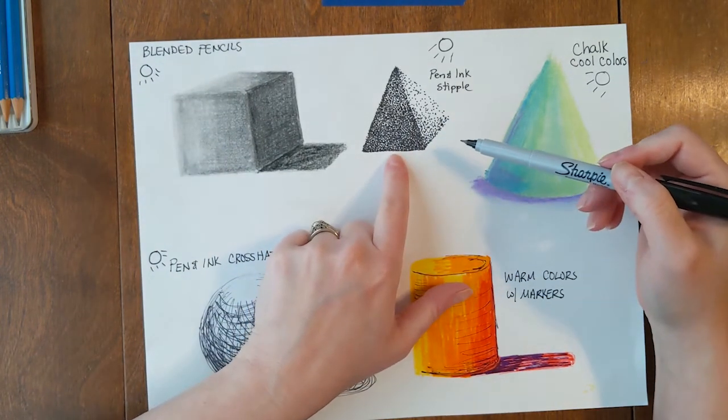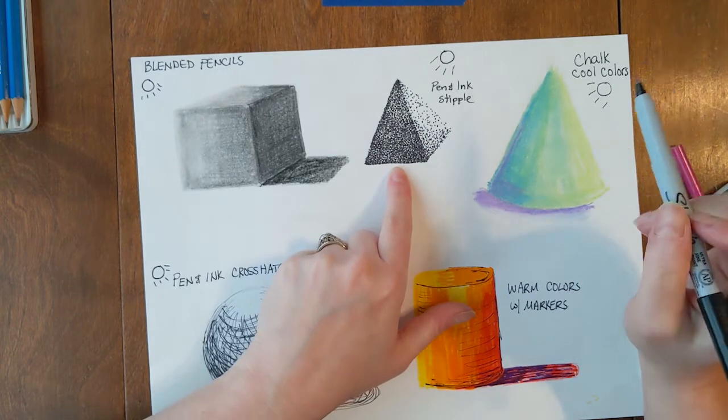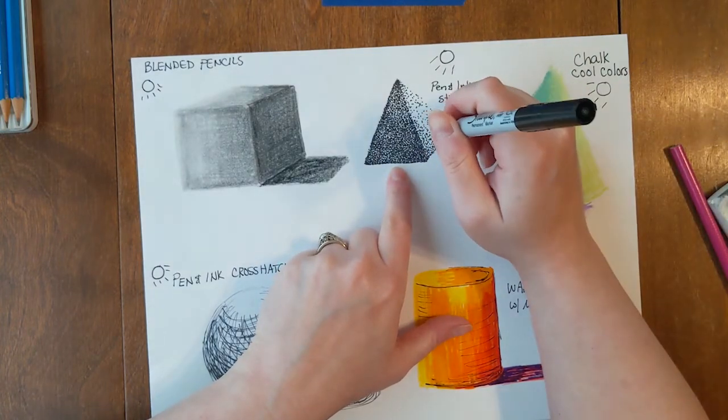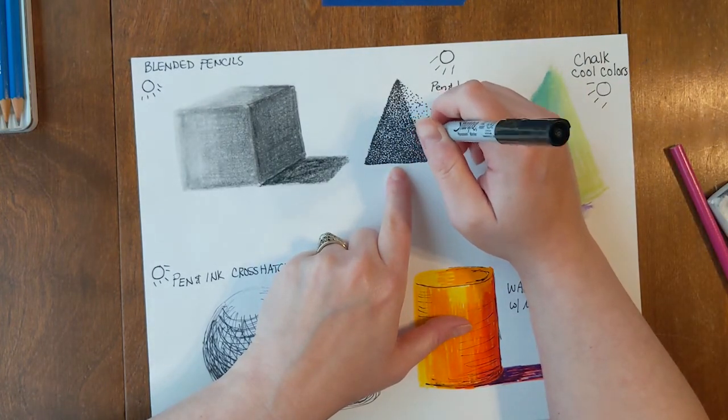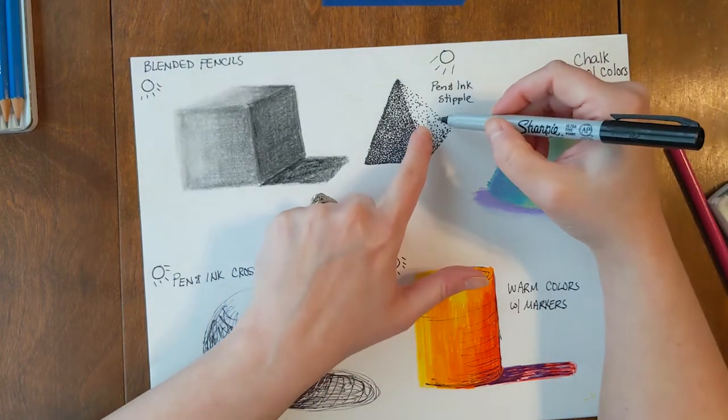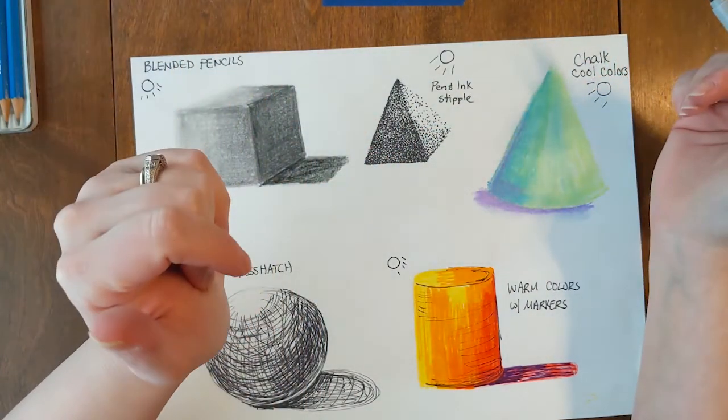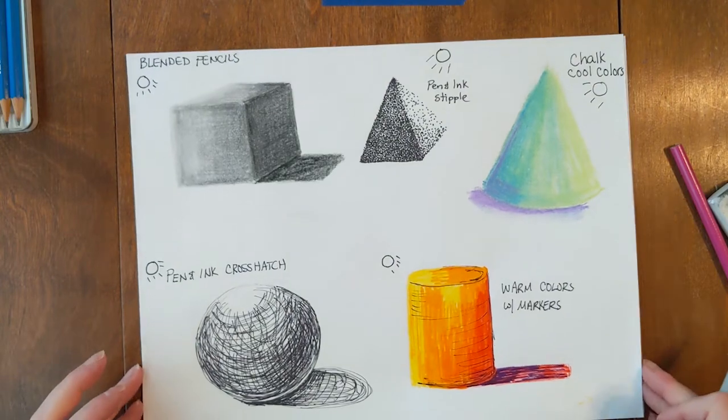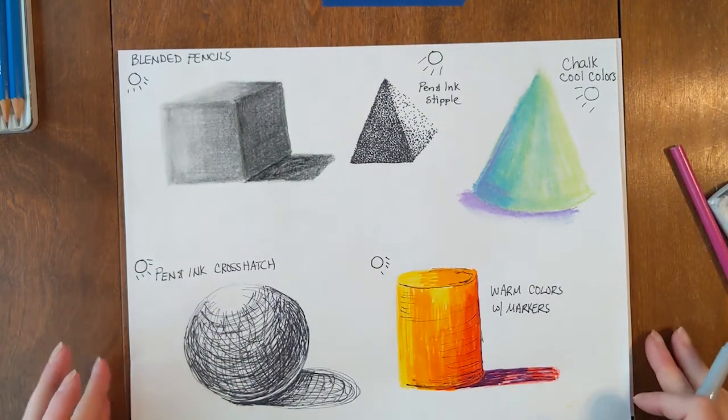For the stippling, this is just tedious, my friends. If you want to try it out, man, gold star for you. You just add dots. You want to start far apart because you can always add more. You can't take them away. So your challenge is to do some of these shapes, turn them into forms.